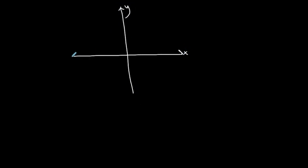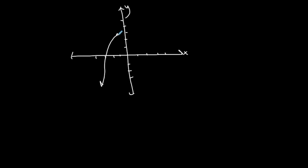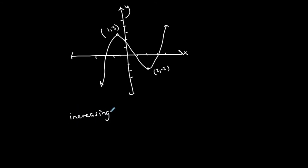Now let me do another example asking for the same things: intervals where the function is increasing, decreasing, and constant. Let's do a different kind of function, with a point at (2, −2) and a point at (1, 3).